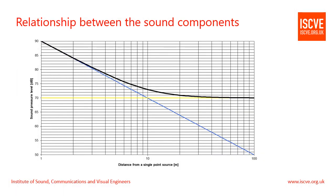So, what's going on? This graph shows the relationship between the direct level, the reverberant level, and the total level as a listener moves away from a source in a room. On the y-axis is the sound pressure level measured in decibels, and the x-axis shows the distance from the sound source in metres. The blue line represents the direct level. For a loudspeaker that is considered to be a point source, the sound pressure level falls off at approximately 6 dB per doubling of distance. This is known as the inverse square law.